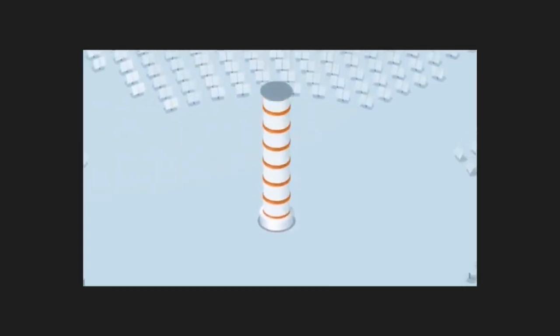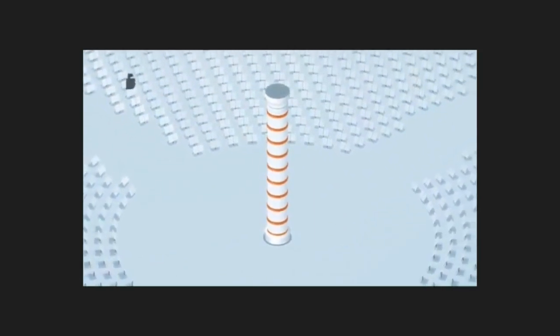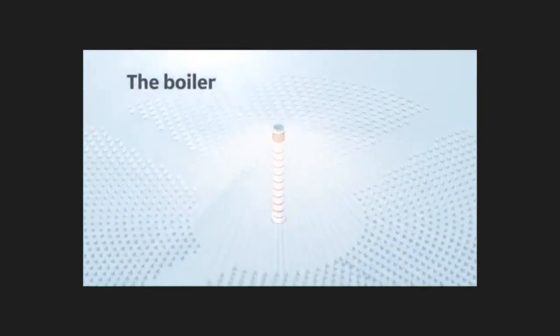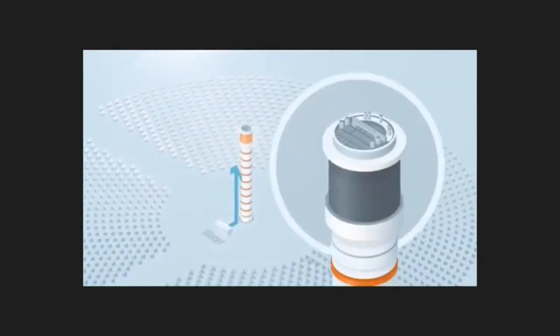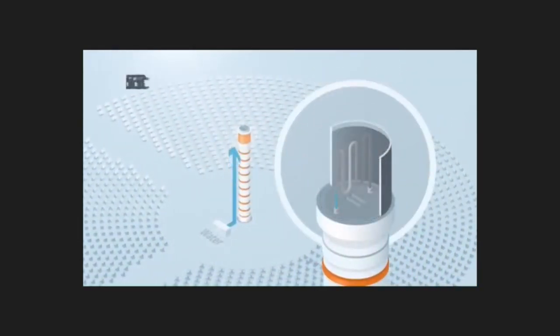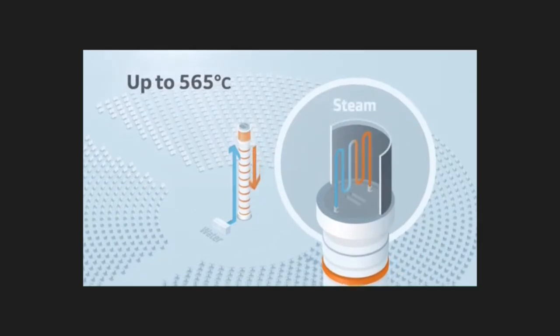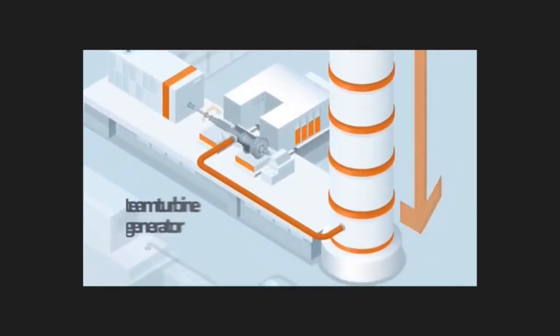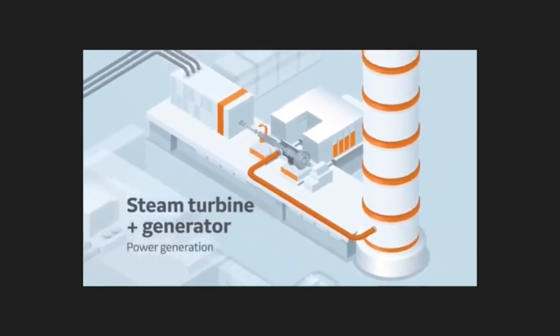The tower is located in the center of the field of heliostats. On top of this tower is the boiler. The sun rays reflected by the mirrors focus on the receiver and achieve heats high enough to turn water into steam. The pressure from this water vapor drives a turbine connected to a generator producing electricity.